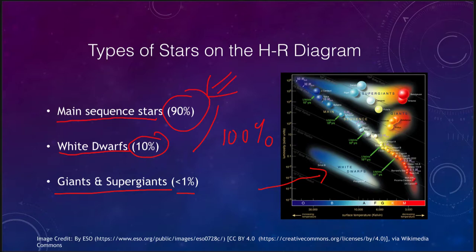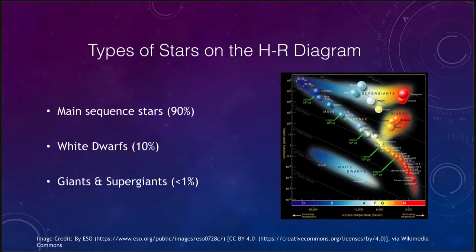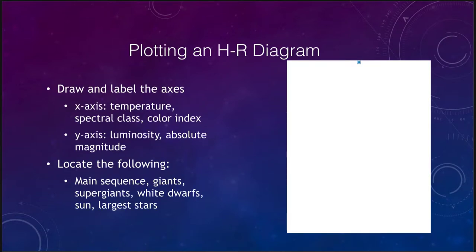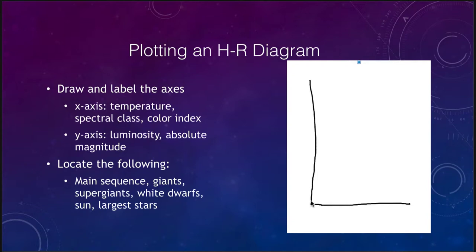We've looked at a couple of HR diagrams, but let's plot one out for ourselves. When we look at this, we first have to draw the axes of the HR diagram. So we put an x-axis here and a y-axis here, and then we have to label what we're going to plot on each of those axes.